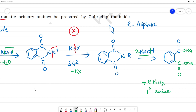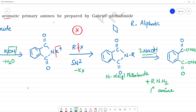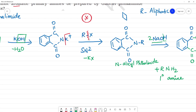Now we will see what this is — this is N-alkyl phthalimide. The important step: why can't aromatic primary amines be prepared? Here, Rx is an alkyl — that is, an aliphatic alkyl halide.